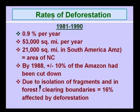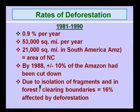Regarding the rate of deforestation, from 1981 to 1990 the rate was 0.9 percent per year, equivalent to 53,000 square miles per year, with 21,000 square miles in South America — the Amazon forest — an area equal to New York City. By 1988, around 10 percent of the Amazon had been cut down, and due to isolation of fragments and forest clearing boundaries, 16 percent was affected by deforestation in that decade.